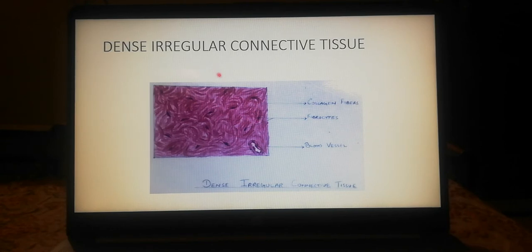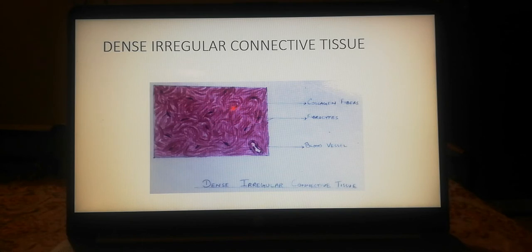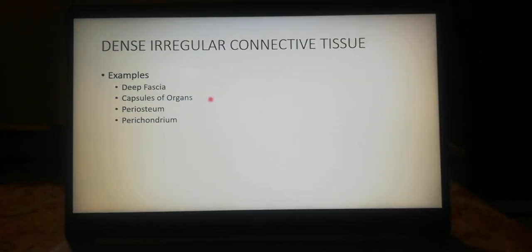In dense irregular connective tissue, it occurs in the form of sheets. In this type, the collagen fibers, the bundles of collagen fibers, are present in the form of an interwoven meshwork. Within the collagen fiber bundles we can see the nuclei of fibrocytes. Capillaries are present in this dense irregular connective tissue to provide nutrients and oxygen. It is usually found in the deep fascia, capsules of organs like thyroid and prostate and liver. It is also found within the periosteum and the perichondrium.